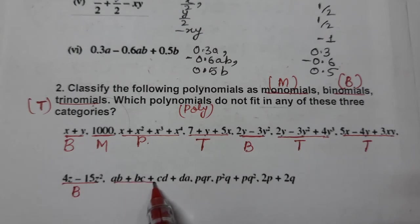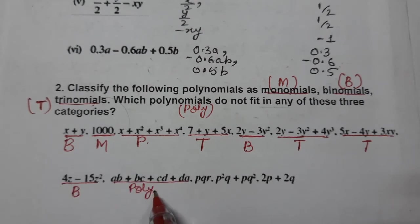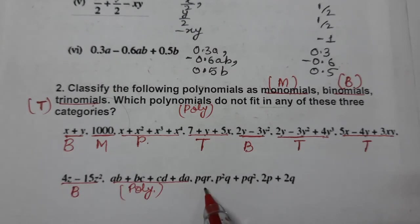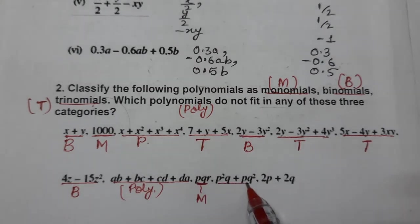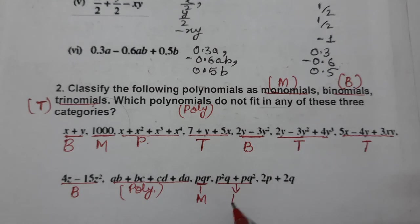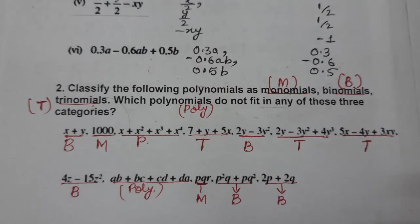AB, BC, CD, DA, four terms. So we can write it Polynomial P. PQR, only single term. So monomial. P²Q + PQ², two terms. Binomial. And last, 2p + 2q is binomial, two terms. So this completes question 1 and 2. I hope you understood. Thank you so much for watching the video.